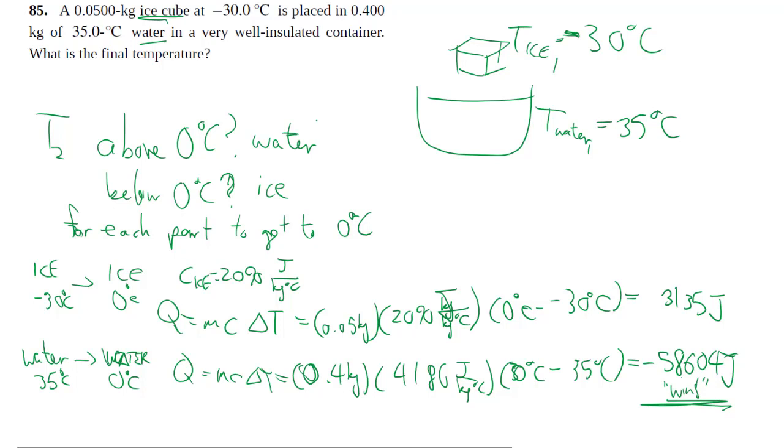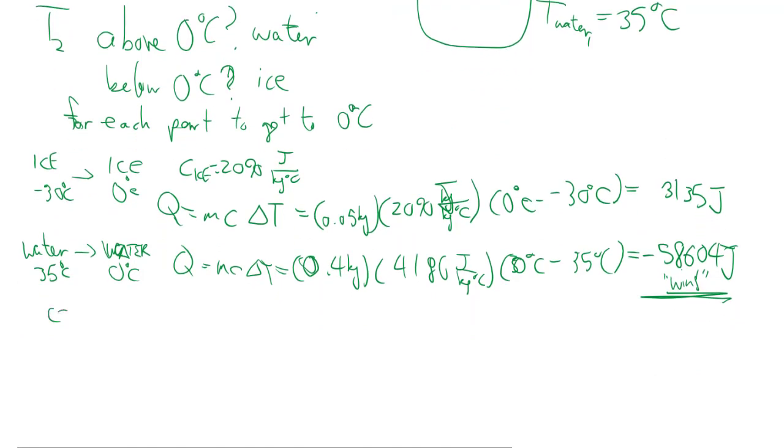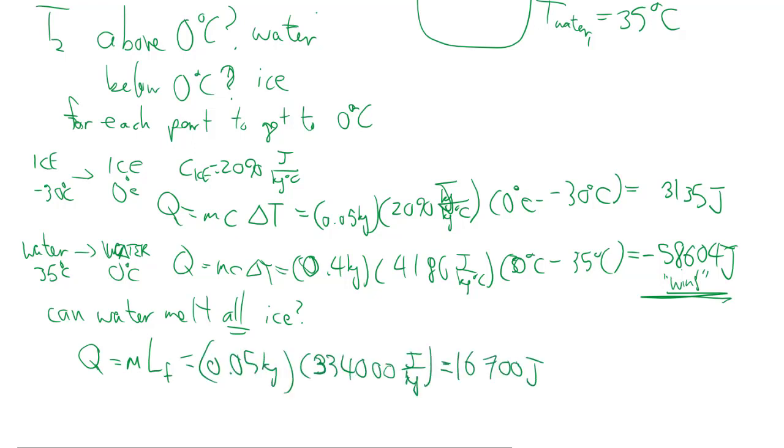But then here comes another question. Is what's in the water enough heat to also melt all the ice? So that's where we deal with the phase change. And it takes this much energy to convert all the zero degrees ice into zero degrees water. So you can see that this amount is able to supply both this and that.